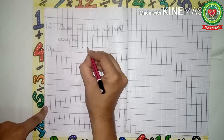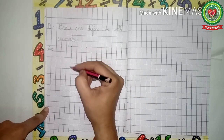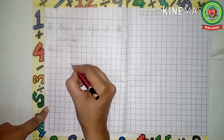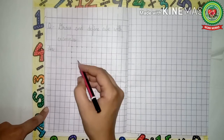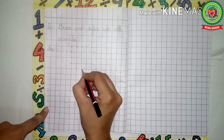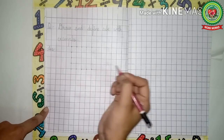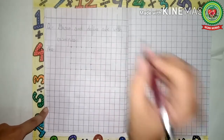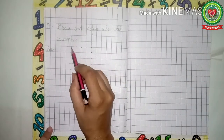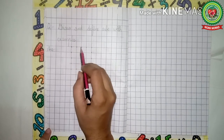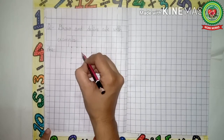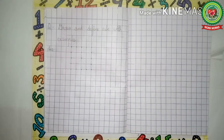Now draw five dots downwards: one, two, three, four, five. Again draw five dots across: one, two, three, four, five. And again: one, two, three, four, five. Now from the third dot — the third dot is one, two, three — draw three dots downwards: one, two, and three.